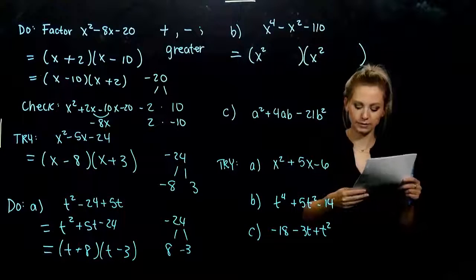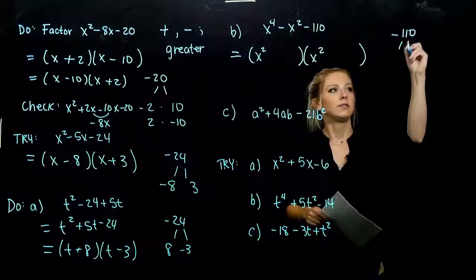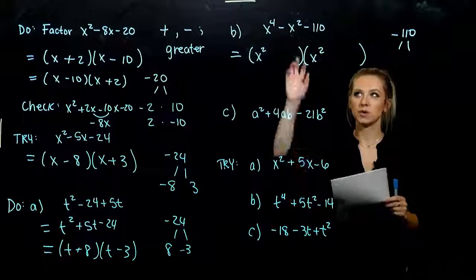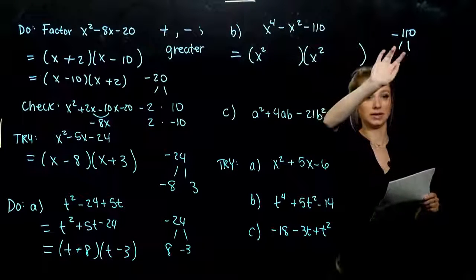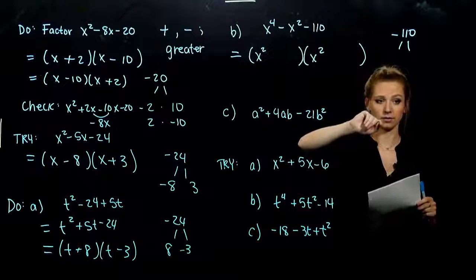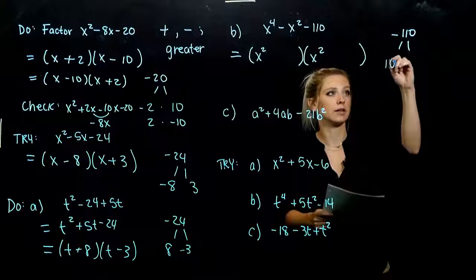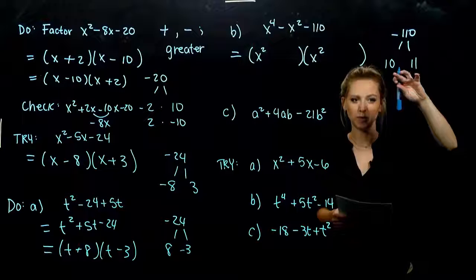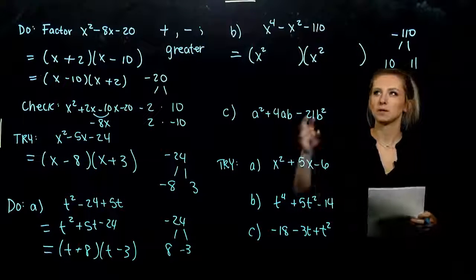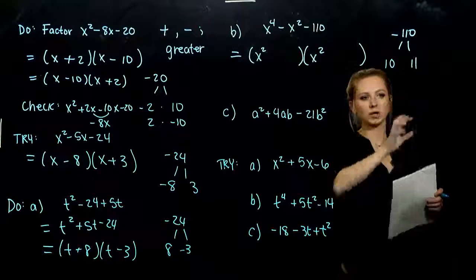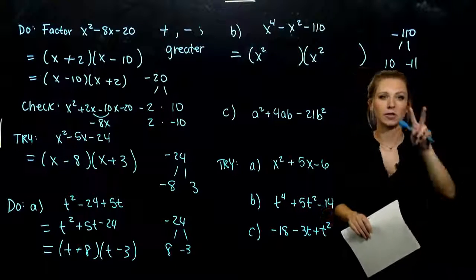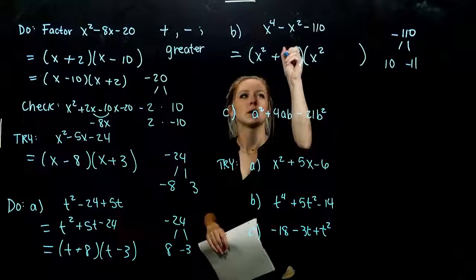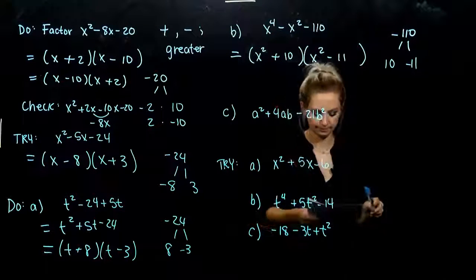So now we want to break up negative 110 into factors multiplying to negative 110, adding to negative 1. So negative 1 is really small. So what does that tell us about these factors? They're going to be really close together. So which are some that are close together? 10 and 11, multiplying to give us 110. But we need it to be negative. So we've got to figure out which one needs to be positive, which one needs to be negative. So I need it to be negative in the middle. So my greater term needs to be negative, so that when we add it, we get there. When we multiply, we get here. Again, order doesn't matter. So positive 10, negative 11.